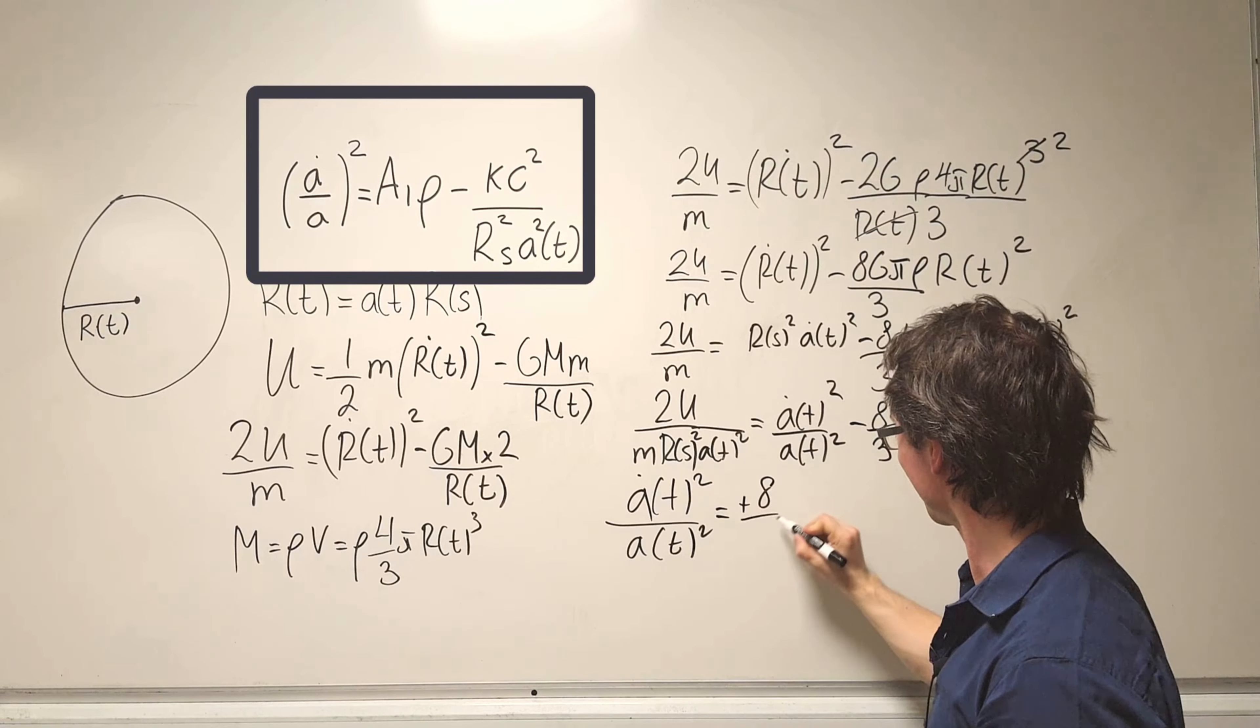So we have successfully found the value of our constant to be 8 over 3 G multiplied by pi. In the equation that we have derived, A1 the constant is 8 over 3 G times pi.